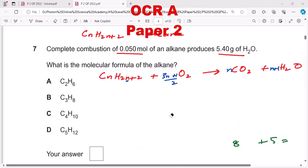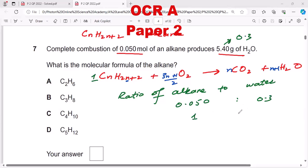So ratio of alkane to water is 0.050 to 0.3 moles. From the balanced chemical equation, alkane is one mole and the water is n+1.